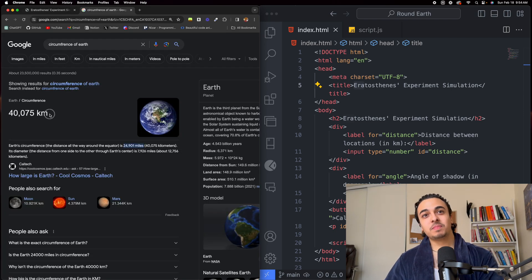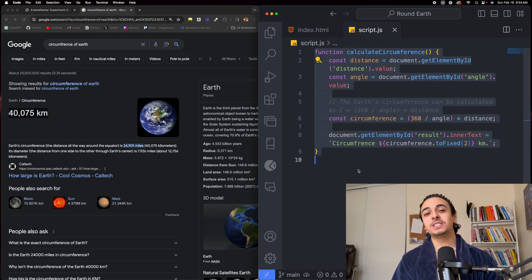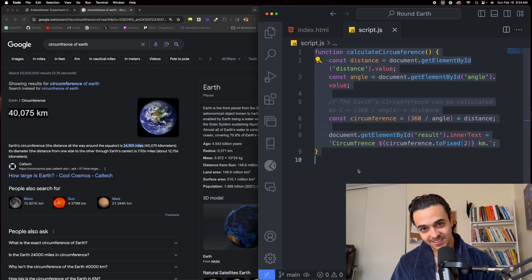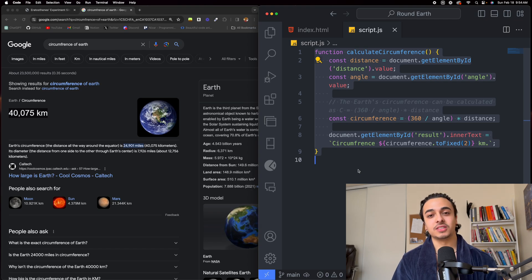And would you look at that? The circumference of the Earth is 40,000 kilometers. And using a very simple calculation that 10th graders can use, we were able to prove these flat Earth idiots as wrong.